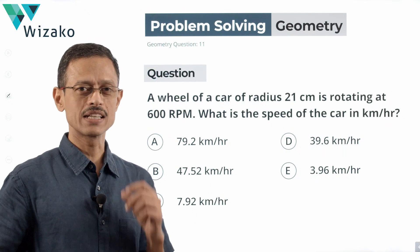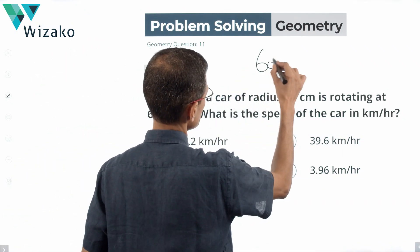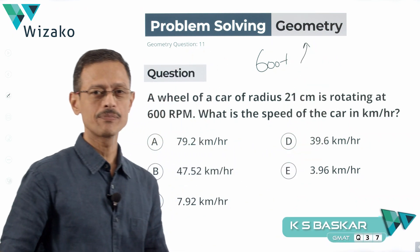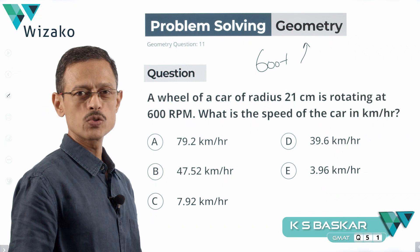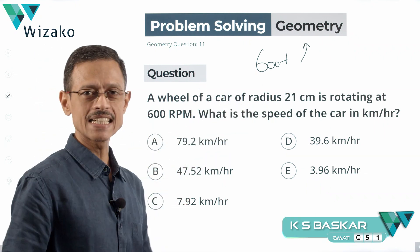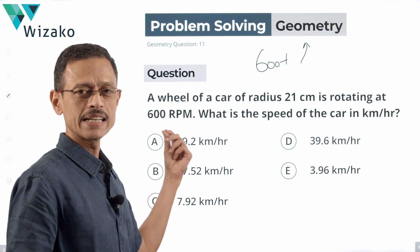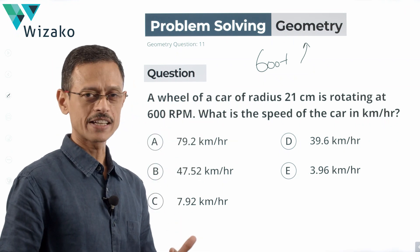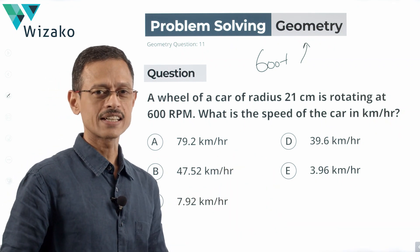This is an interesting question, an easy one nevertheless. Classify the question as a GMAT 600 plus problem-solving practice question in geometry. A wheel of a car of radius 21 centimeters is rotating at 600 RPM. What we need to compute is the speed of the car in kilometers per hour. We have five answer options as always. Let's get started.